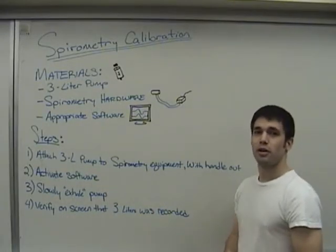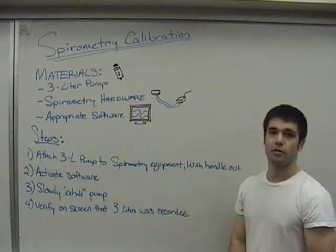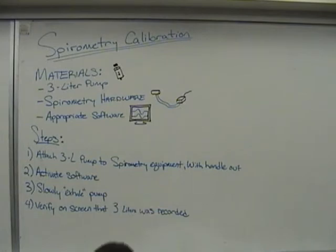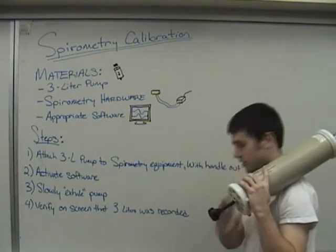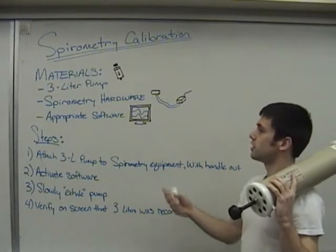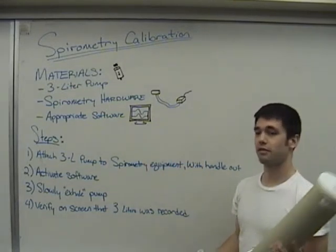An important part of doing your testing is making sure that your equipment is calibrated. For spirometry calibration, we're going to need three items. First is a pump. Next, you will then need spirometry hardware and appropriate software, which we happen to have in the computer lab.